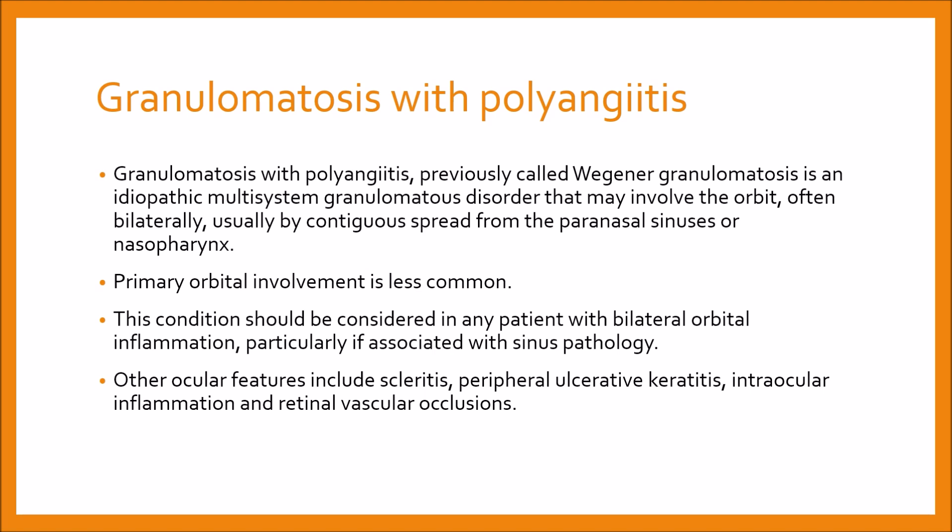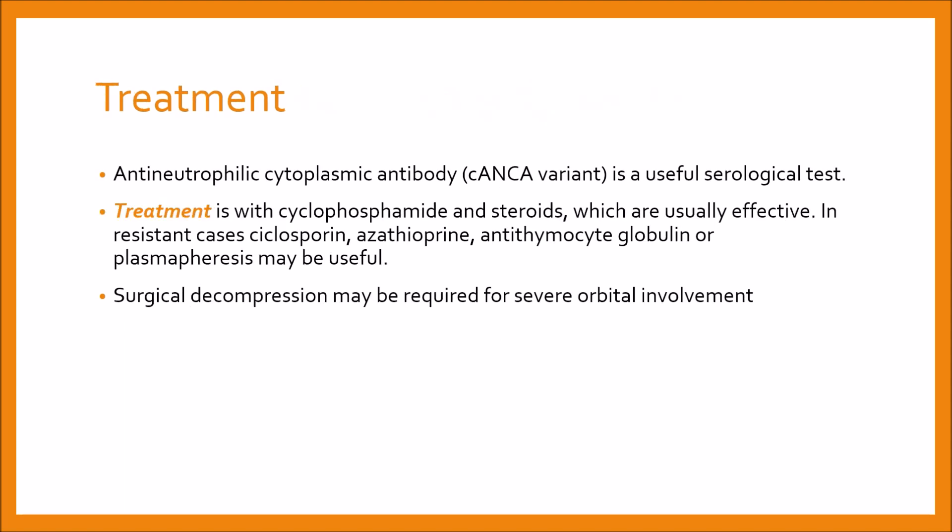Other ocular features include scleritis, peripheral ulcerative keratitis, intraocular inflammation, and retinal vascular occlusion. The c-ANCA variant is a useful serological test. Treatment is with cyclophosphamide and steroids, which are usually effective. In resistant cases, cyclosporine, azathioprine, anti-thymocyte globulin, or plasmapheresis may be useful. Surgical decompression may be required for severe orbital involvement.